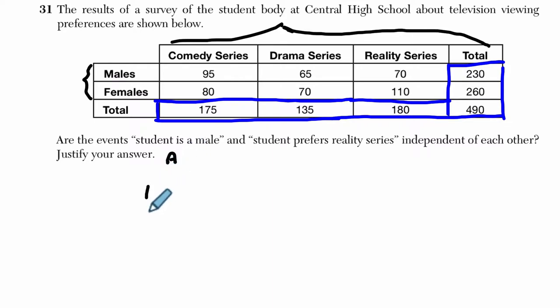has a probability. The probability that a student is a male, I'll use A for that, calling this event A, you can call it M for male if you want, is 230, there are 230 males, out of the total, that's this marginal frequency right here, 490. Okay, let's just go to the next one.